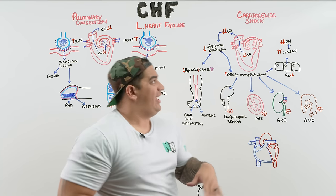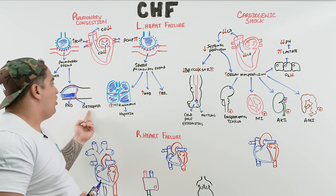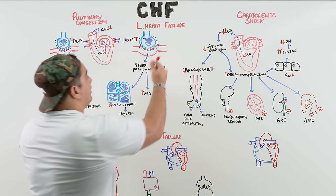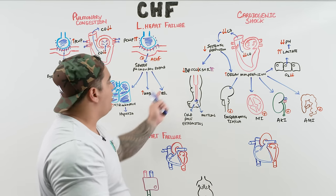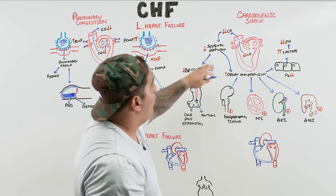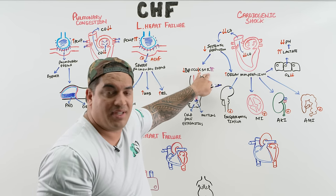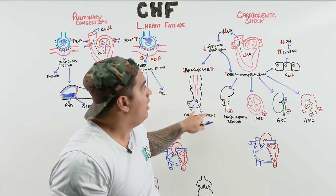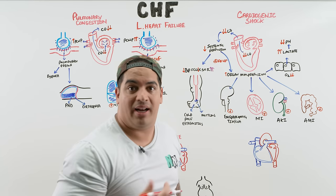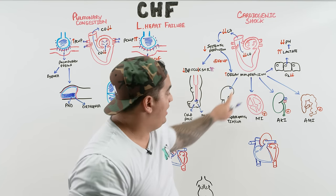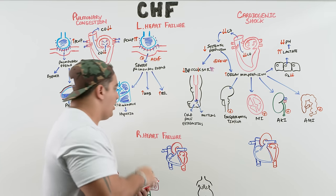To summarize the clinical spectrum: chronic CHF may present with just dyspnea, paroxysmal nocturnal dyspnea, or orthopnea, with mild decreased systemic perfusion and compensatory SVR elevation causing cold, pale, mottled extremities. Acute decompensated heart failure from triggers like MI, tachyarrhythmias, or medication non-compliance causes severe pulmonary edema, hypoxia, and respiratory distress, and can progress to organ malperfusion — encephalopathy, MI, AKI, mesenteric ischemia, and lactic acidosis.